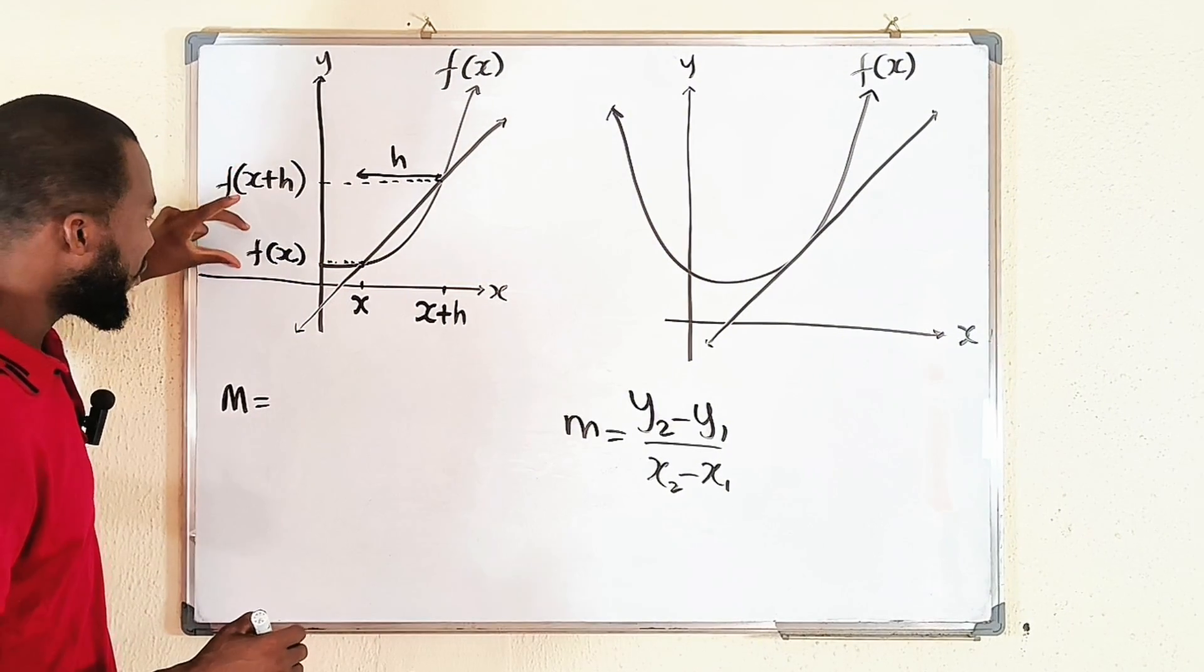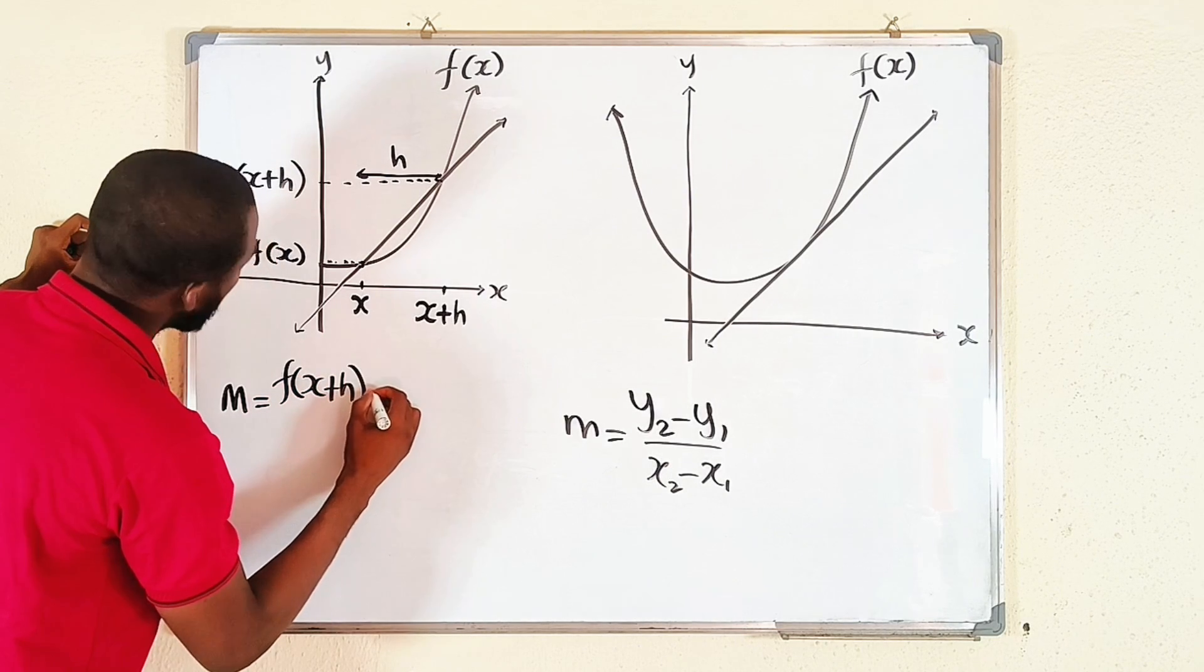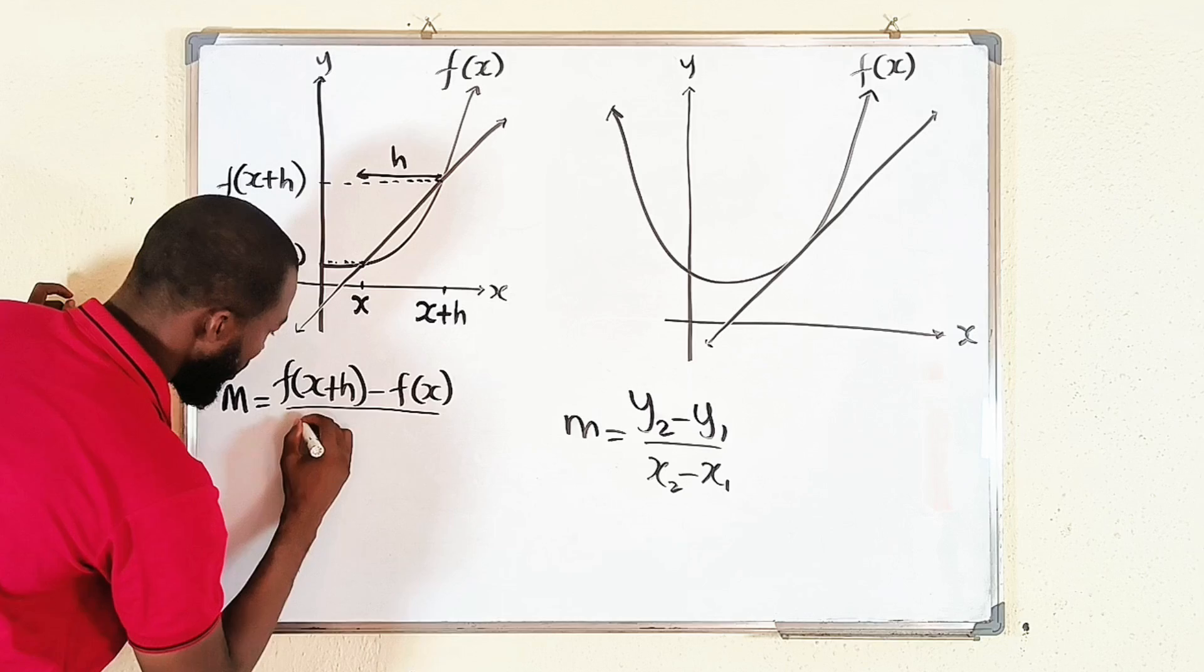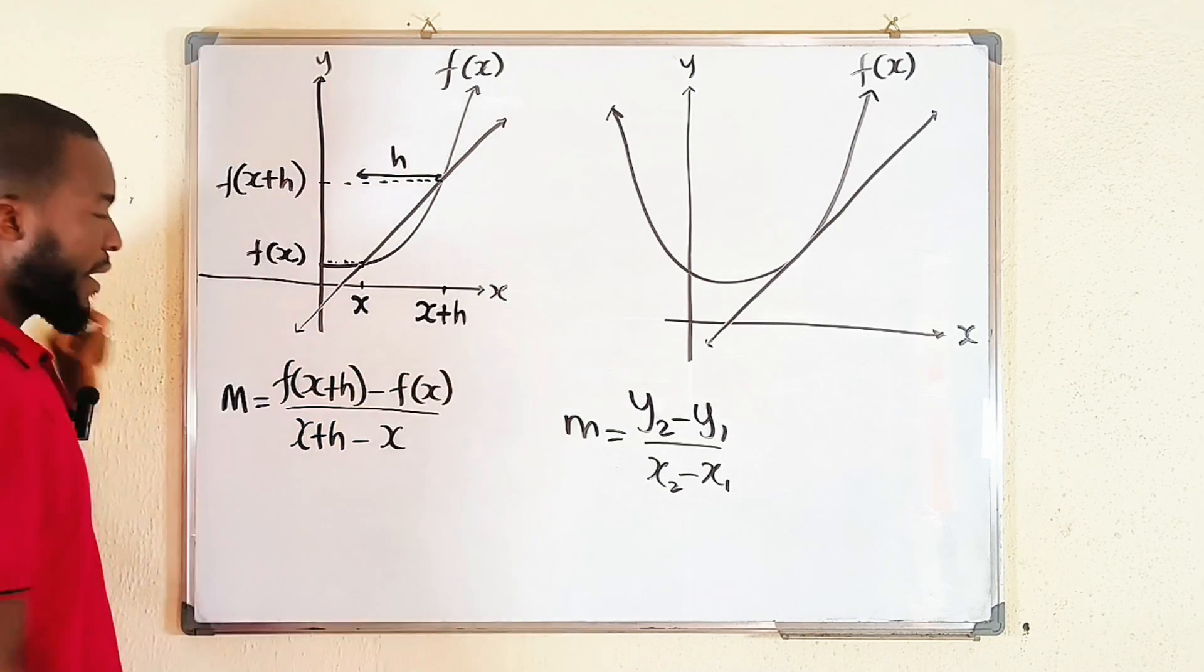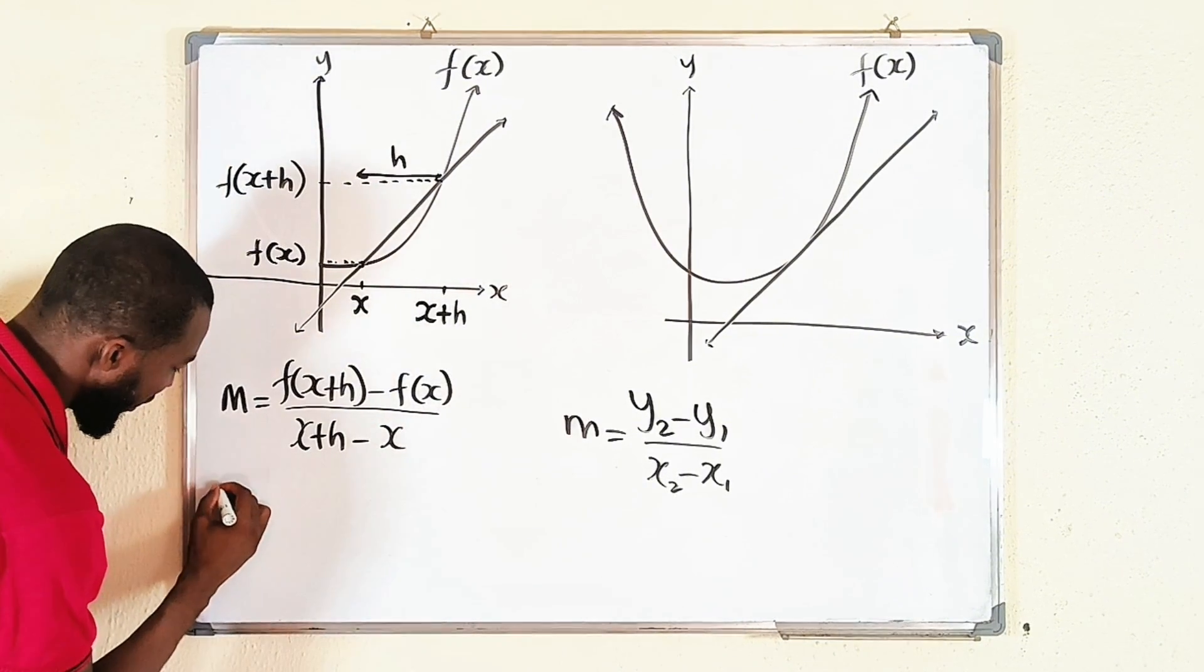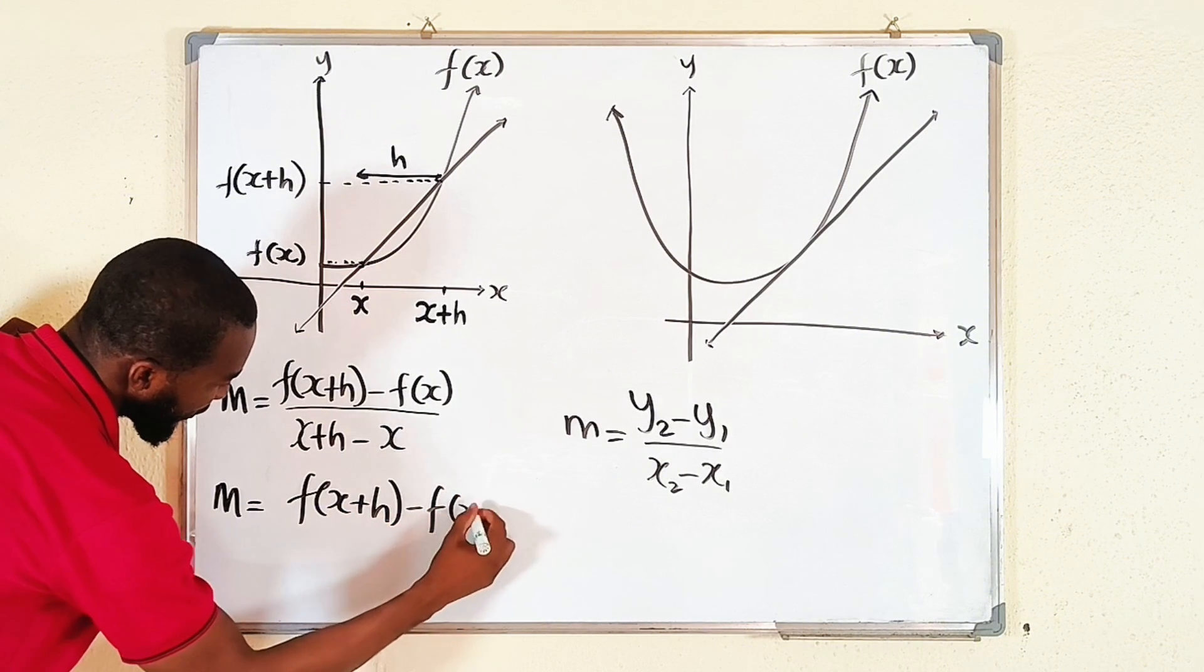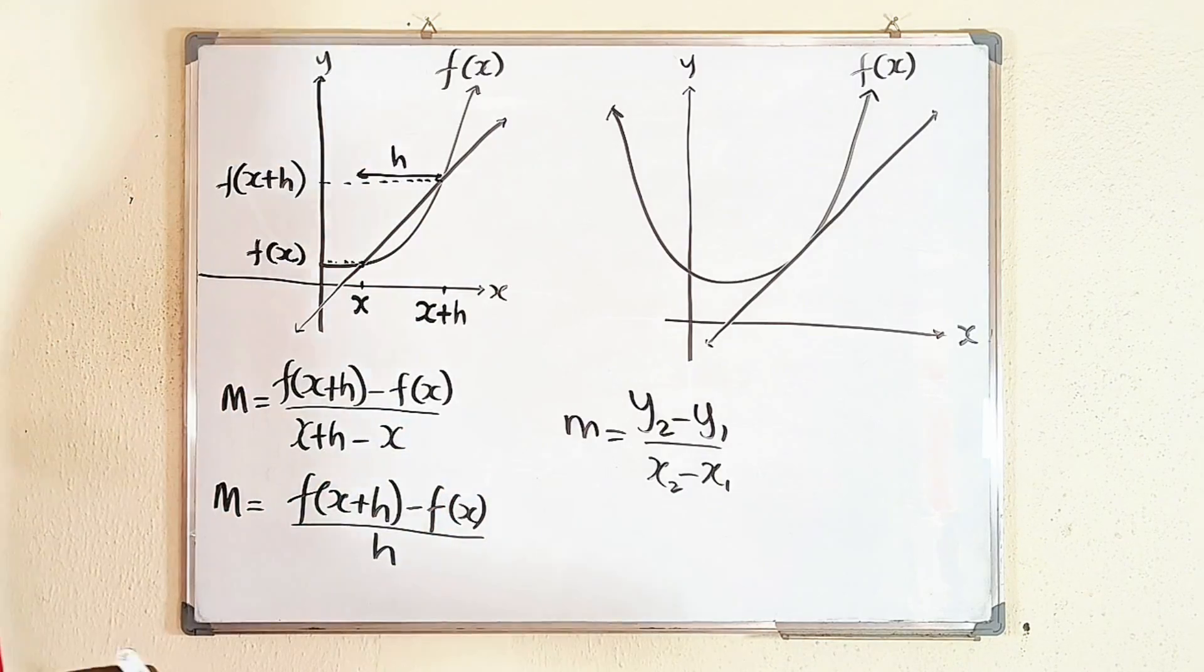So the slope m is equal to... This is our y2, this is our y1. It will be f of x plus h minus f of x, right? Divide by... What is x2? This is going to be our x2, x plus h minus x. And if you simplify further, you can see x minus x is 0, so we only have h here.